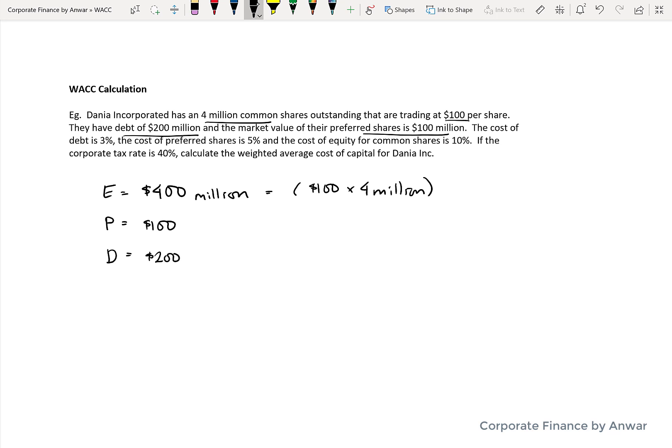Preferred shares, we're going to assume that the $100 million is the market value, as is the debt of $200 million. So the total value of this company is going to be the sum of all of the debt and the components of equity, preferred and common.